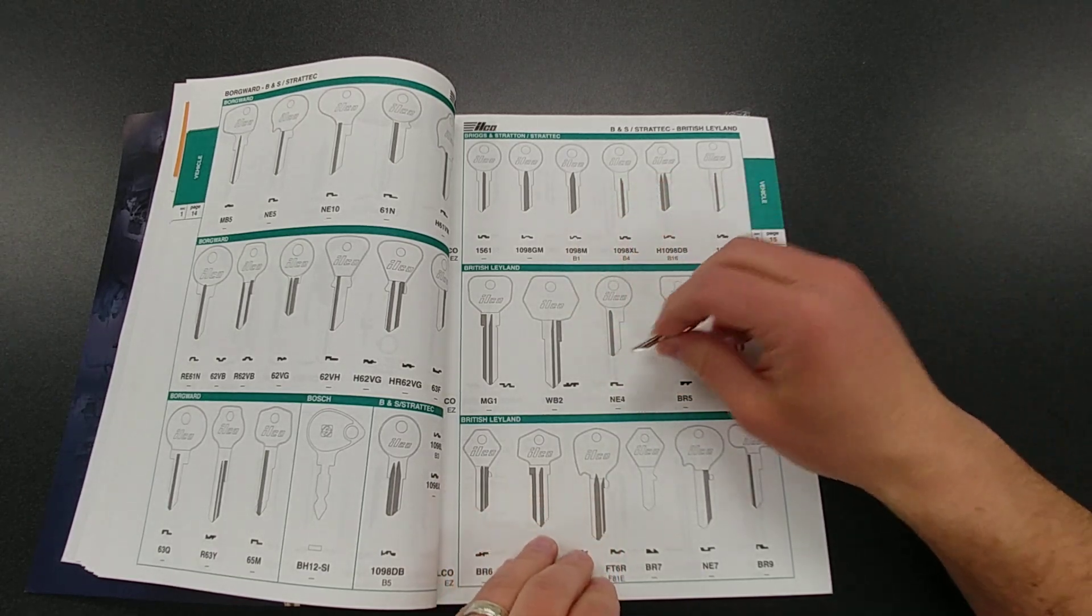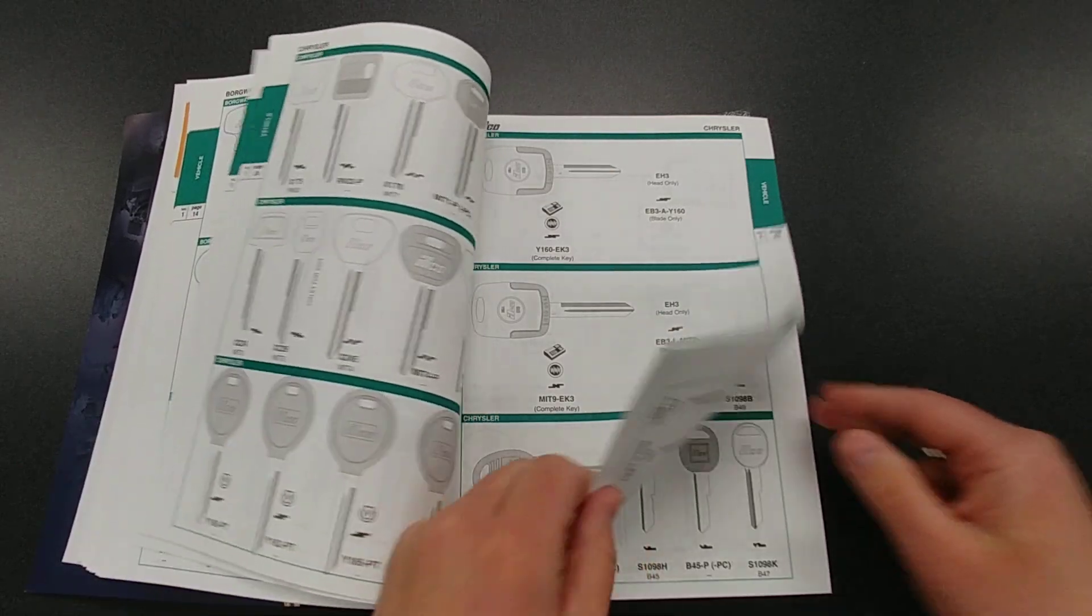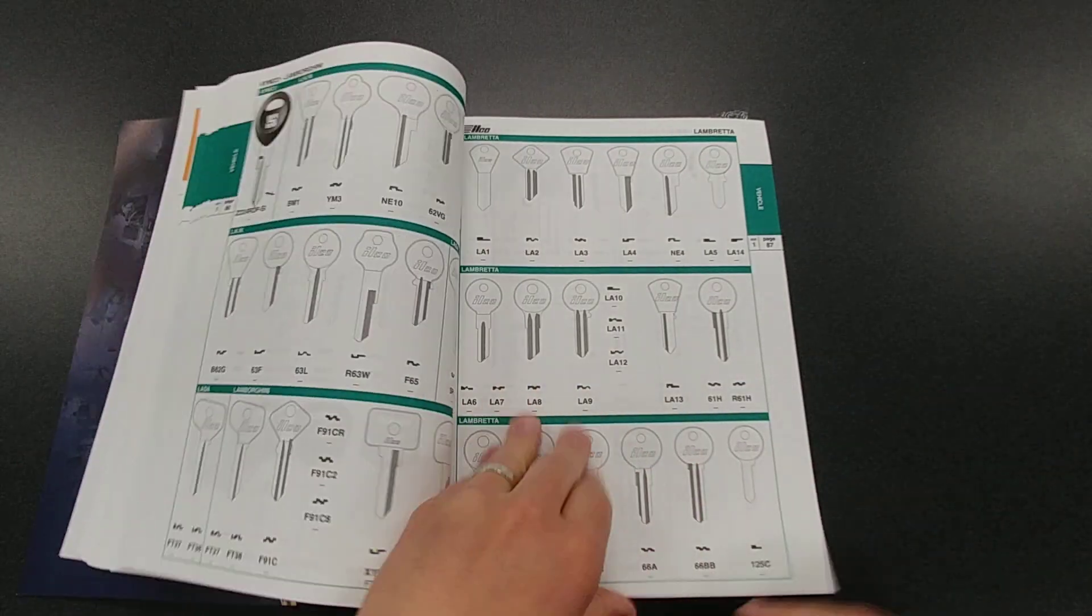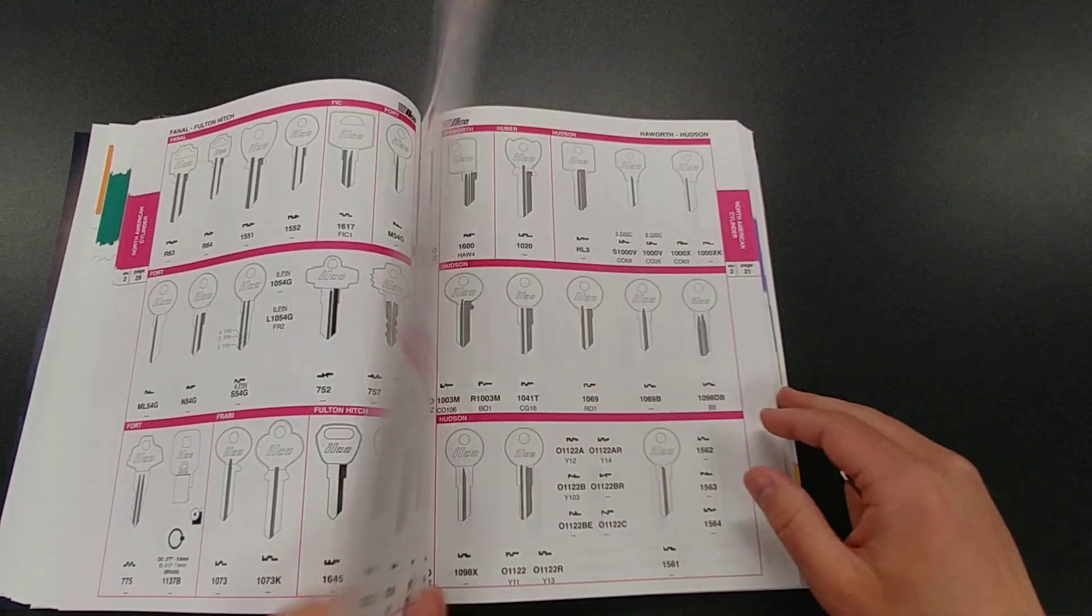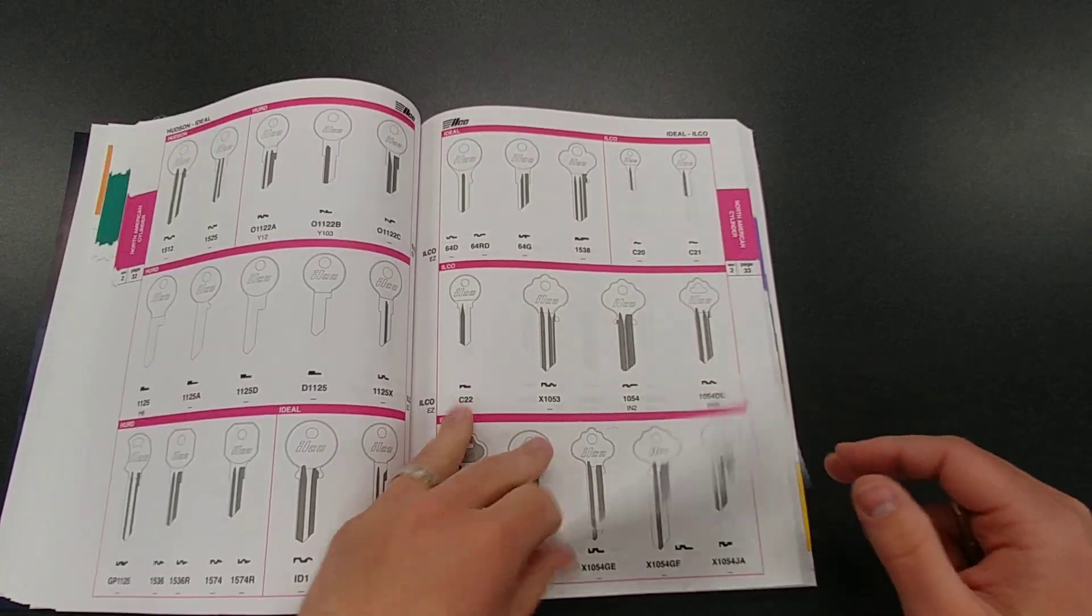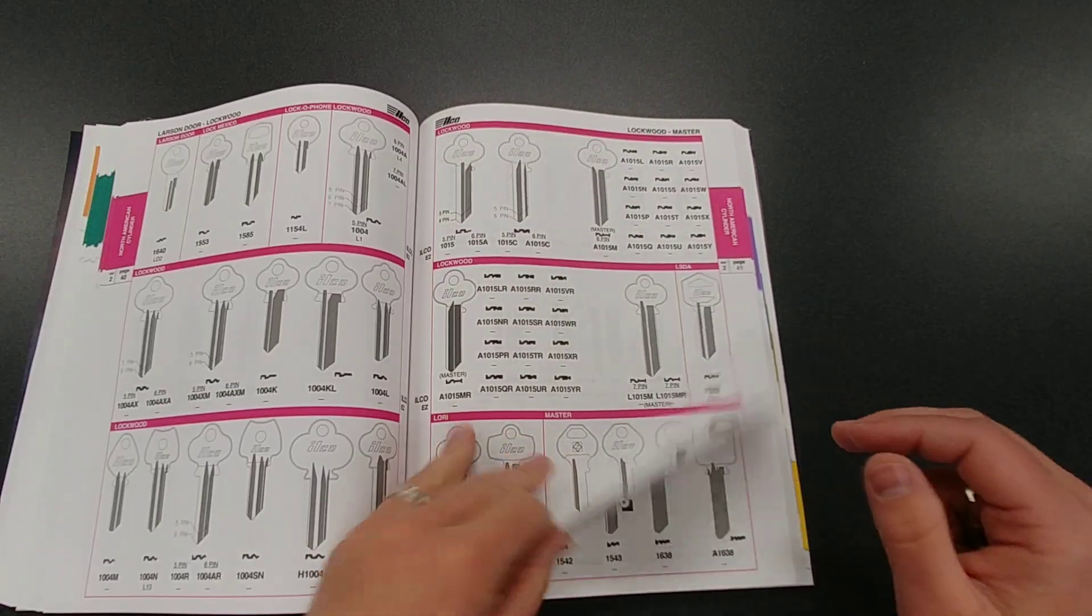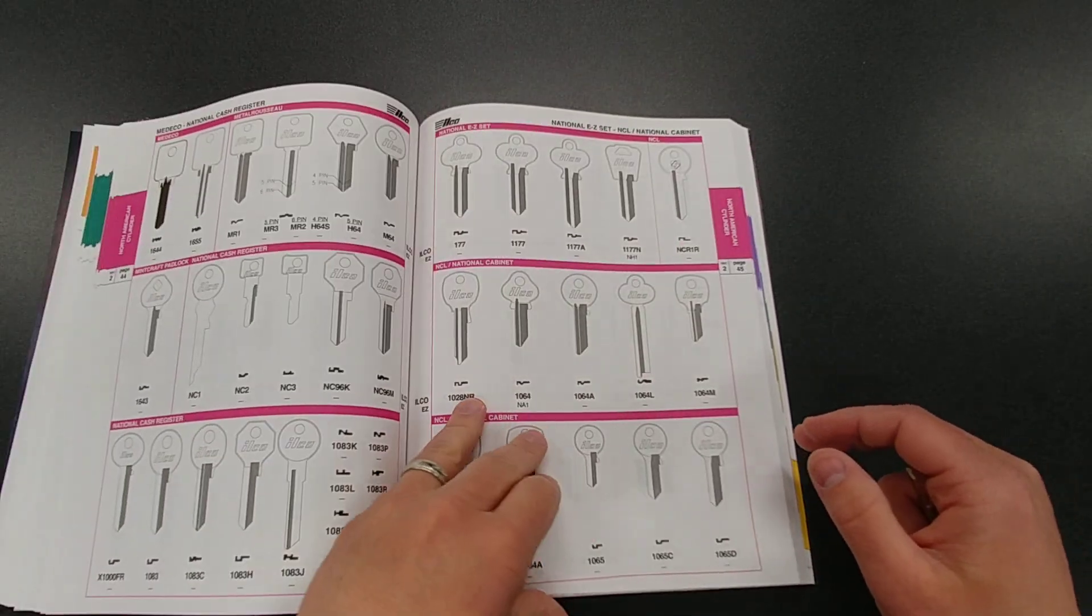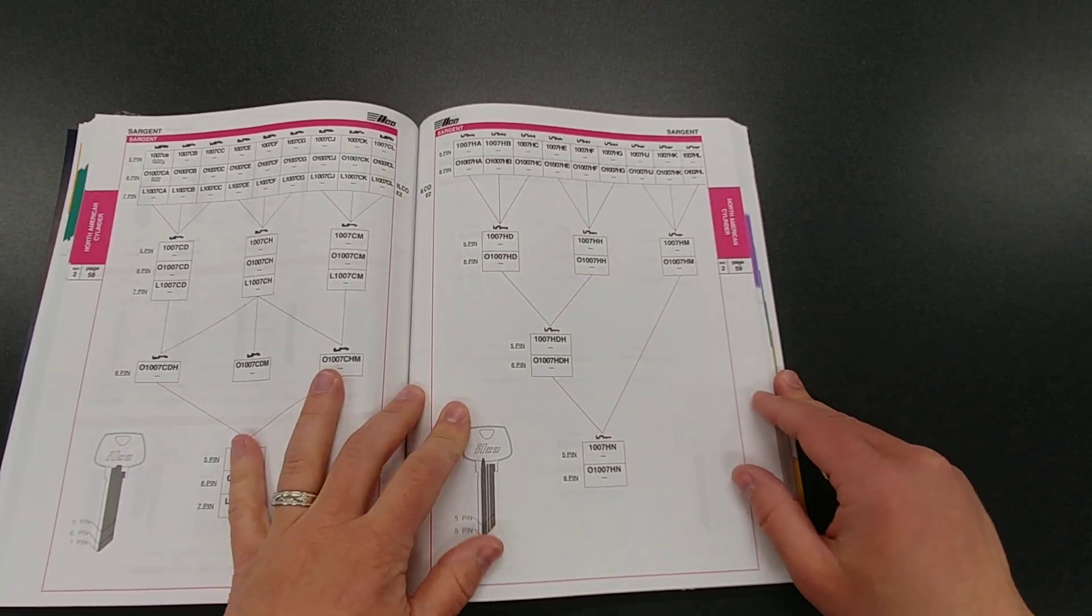So that's really, really helpful when you're trying to identify a key. The other thing I wanted to show you in this book here, let me just move to a section, is the key charts and what that looks like and how that can help you. Hang with me here. Let me just find one. Here we go, Sargent. It's perfect.